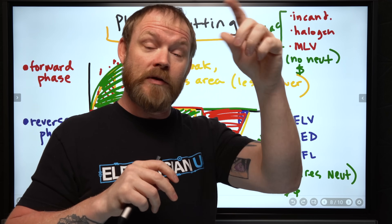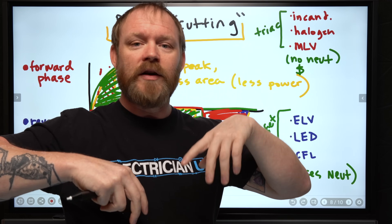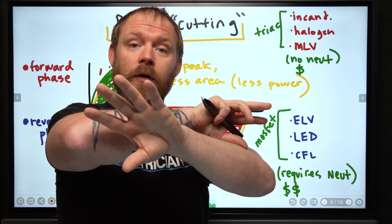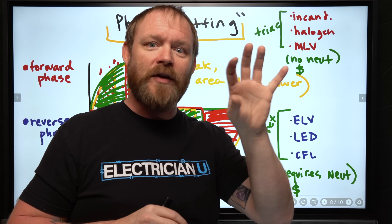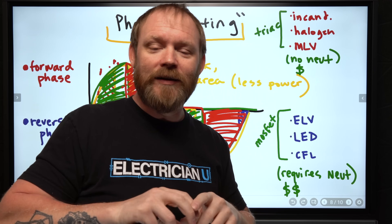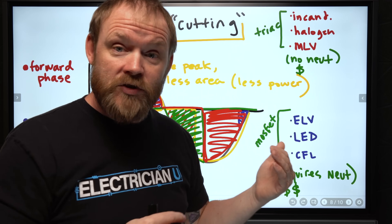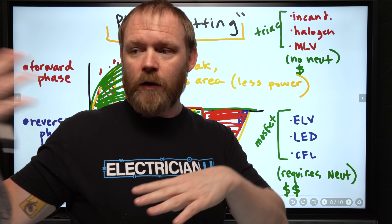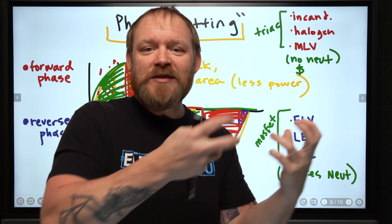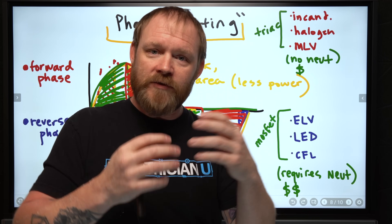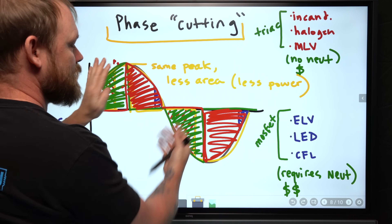If you've done lighting control systems - Crestron, Lutron's Homeworks, RadioRA 2 or 3 - some of them let you actually program in forward phase or reverse phase. So if you have weird fluttering issues in some light bulbs, research the bulb and figure out whether it was designed for reverse phase or forward phase. A lot of times switching from one to the other can fix the problems. If you have a really advanced bulb and a really advanced dimmer giving you control over this, but they aren't perfectly matched, you'll have issues.